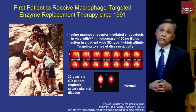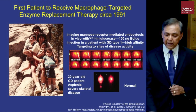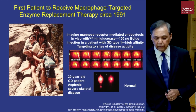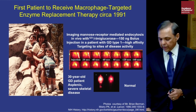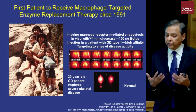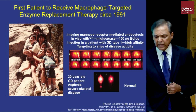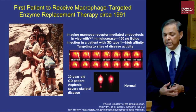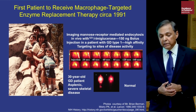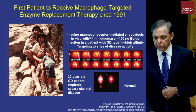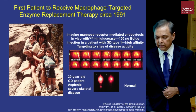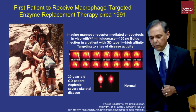The first patient to receive enzyme replacement therapy is Brian Berman, shown with his parents and siblings. When the mannose-terminated enzyme was developed, he was four years old, desperately sick with massive hepatomegaly and splenomegaly 75 times the normal limit. He was anemic with thrombocytopenia and was the first patient to receive enzyme replacement therapy. He has one N370S allele, hence he had type 1 Gaucher disease.